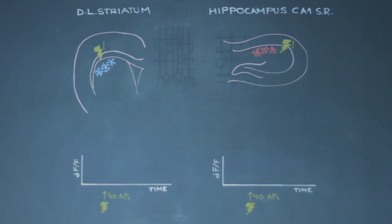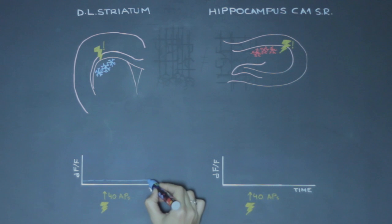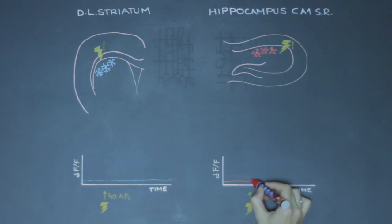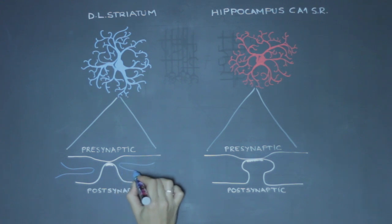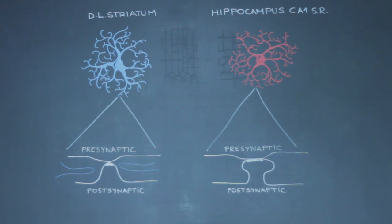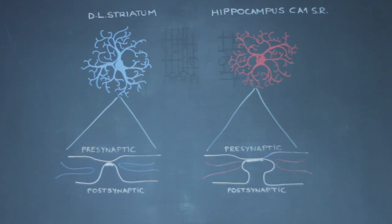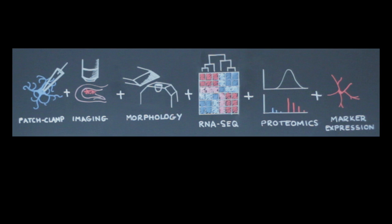We also examined astrocyte calcium signaling upon direct electrical stimulation of excitatory glutamatergic inputs to both regions. In this case, more hippocampus astrocytes responded with intracellular calcium increase during bursts of neuronal firing. When we examined the physical relationship between astrocytes and excitatory synapses using electron microscopy, we found that astrocyte processes were closer to excitatory synapses in the hippocampus. Other functional and morphological differences are reported in the paper. In addition, we also looked at their molecular profiles at the RNA and protein level, which Blanca will explain.